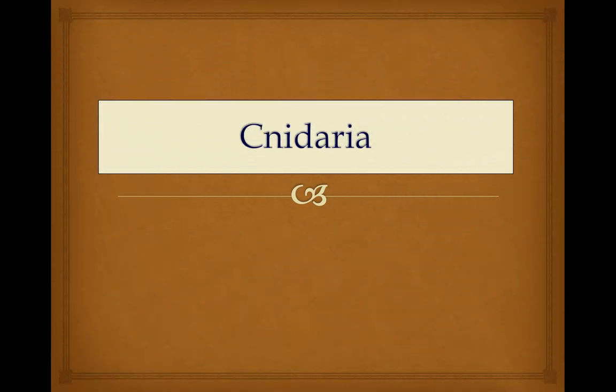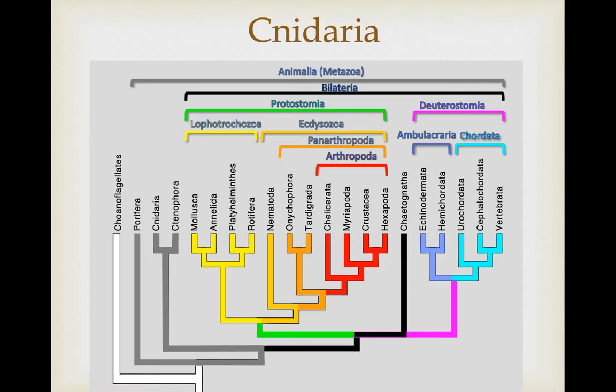In this video, we're going to cover the Cnidarians. In the last video, we talked about the choanoflagellates as being the protozoan group from which animals are derived, and we talked about our first animal group, the Porifera, the sponges, which are really simple animals. We're going to talk about a much more diverse, at least morphologically, and more complex anatomically group, the Cnidarians, this video.